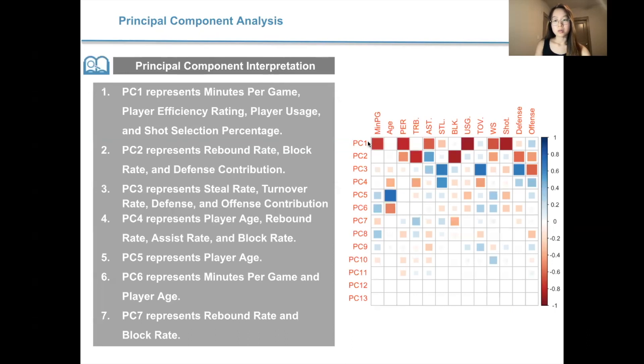So here we can use this heat map to interpret all of our principal components one through seven. PC1 represents minutes per game, player efficiency rating, player usage, and shot selection percentage. PC2 represents rebound rate, block rate, and defense contribution. PC3 represents steal rate, turnover rate, defense, and offense contribution. PC4 represents player age, rebound rate, assist rate, and block rate. PC5 represents player age. PC6 represents minutes per game and player age. PC7 represents rebound rate and block rate.